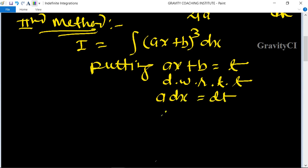dt. Therefore dx = 1 upon a dt. So therefore integration I equals... we put ax + b